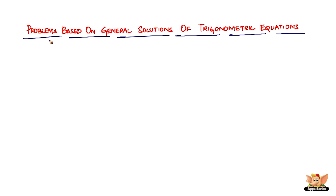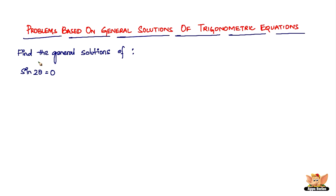In this video, let us solve problems based on general solutions of trigonometric equations. So here we've got a question which reads: find the general solutions of sine 2 theta equals 0.